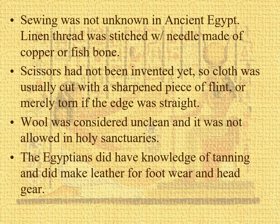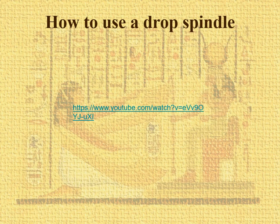Scissors hadn't been invented yet, so you would cut the cloth with a sharpened piece of flint, or tear it. Wool was considered unclean — worn by the lower classes but not allowed in holy sanctuaries. We do have some knowledge of tanning, so we have leather, mostly for footwear and some headgear. Here is a link to how to use a drop spindle — it's only about a minute twenty seconds if you're interested.